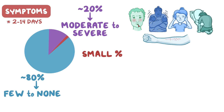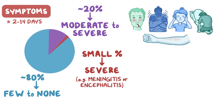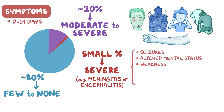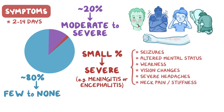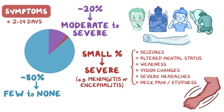A very small amount of people, usually those with underlying medical problems like the elderly or the young, develop severe symptoms like meningitis or encephalitis. These conditions can present with seizures, altered mental status, weakness, vision changes, severe headaches, and neck pain or stiffness. A unique feature of West Nile meningitis is the presence of a coarse tremor in the upper extremities.